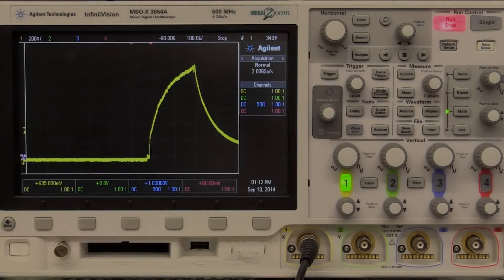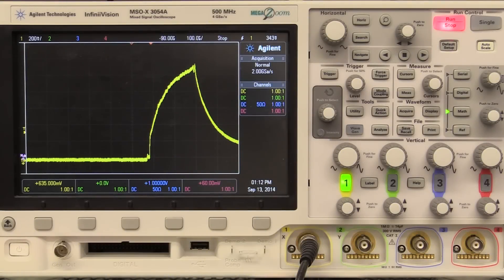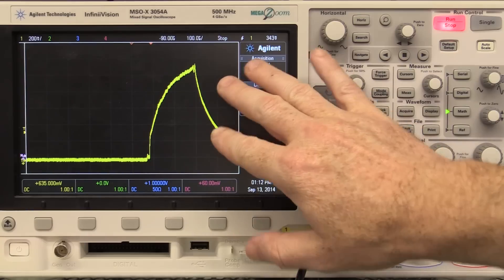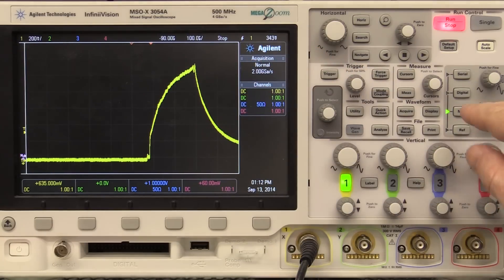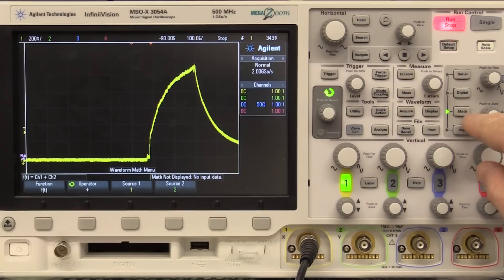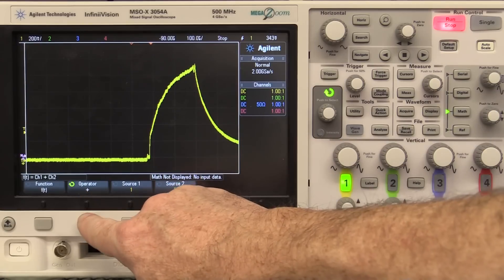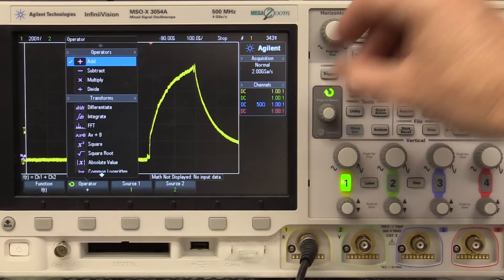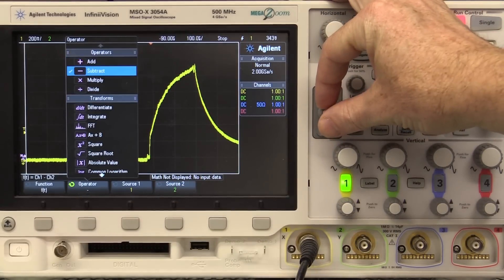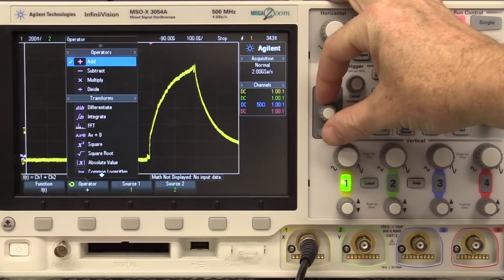Hi. Modern digital scopes are wonderful tools and can have very powerful analysis and software capabilities. In particular, they have lots of math functions. Now, if we take a look at the math function over here, you'll notice that all of these transforms and operators, look at what we can do in one of these modern scopes.